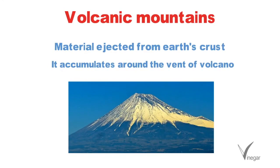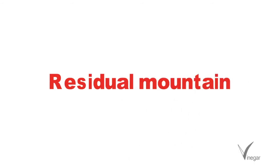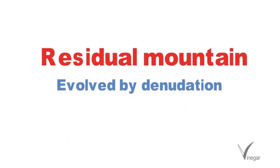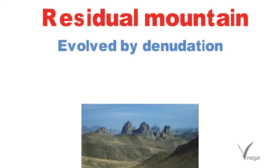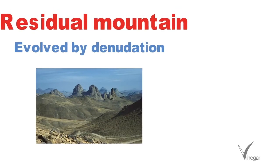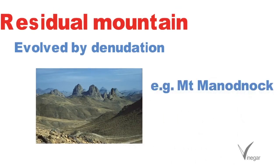An example of a volcanic mountain is Mount Fuji in Japan and Mount Mayon in the Philippines. The fourth type of mountain is the residual mountain. Such mountains are formed by denudation — when a land subsides because of denudation but the resistant areas are left behind. An example of such a mountain is Mount Monadnock in the USA.